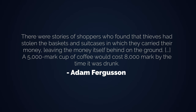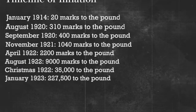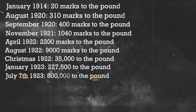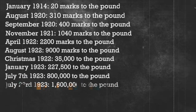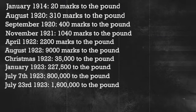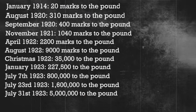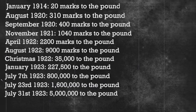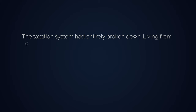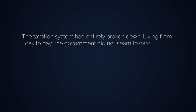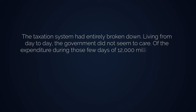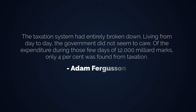People became incredibly hungry. Whereas the first part of the inflation period was all about what luxuries you need to do without, it was now a matter of what necessities you need to do without. The mark went from 800,000 to the pound on 7 July 1923, to double that on 23 July, to 5 million to the pound on the 31st. Loss of faith and confidence in the state and in oneself was real. The taxation system had entirely broken down — of expenditure during those few days of 12,000 milliard marks, only 4% was found from taxation. Just the interest on the debt was actually higher than the whole taxation.